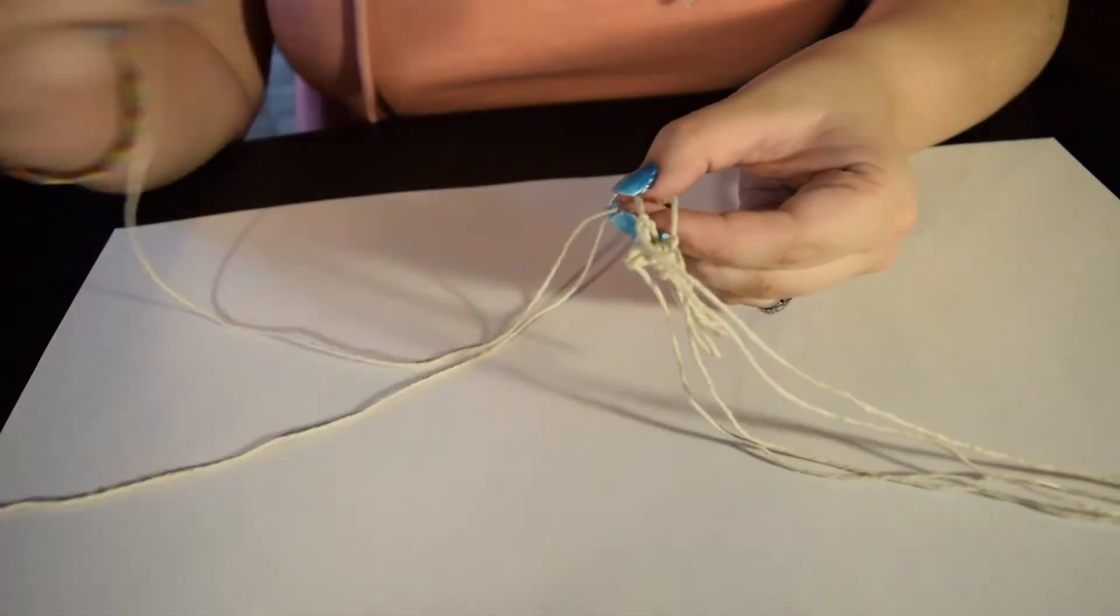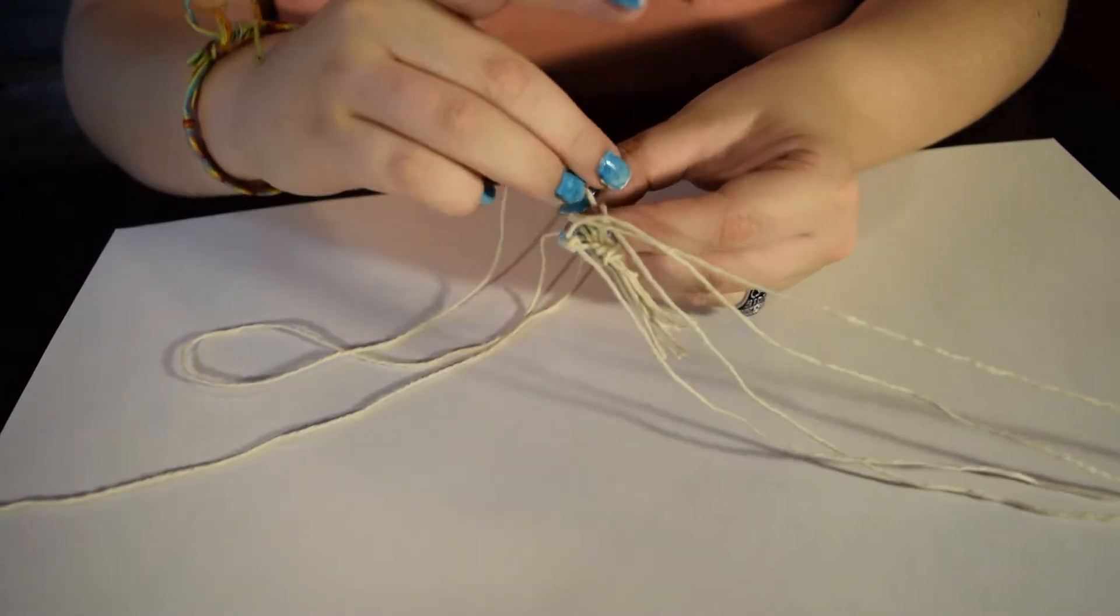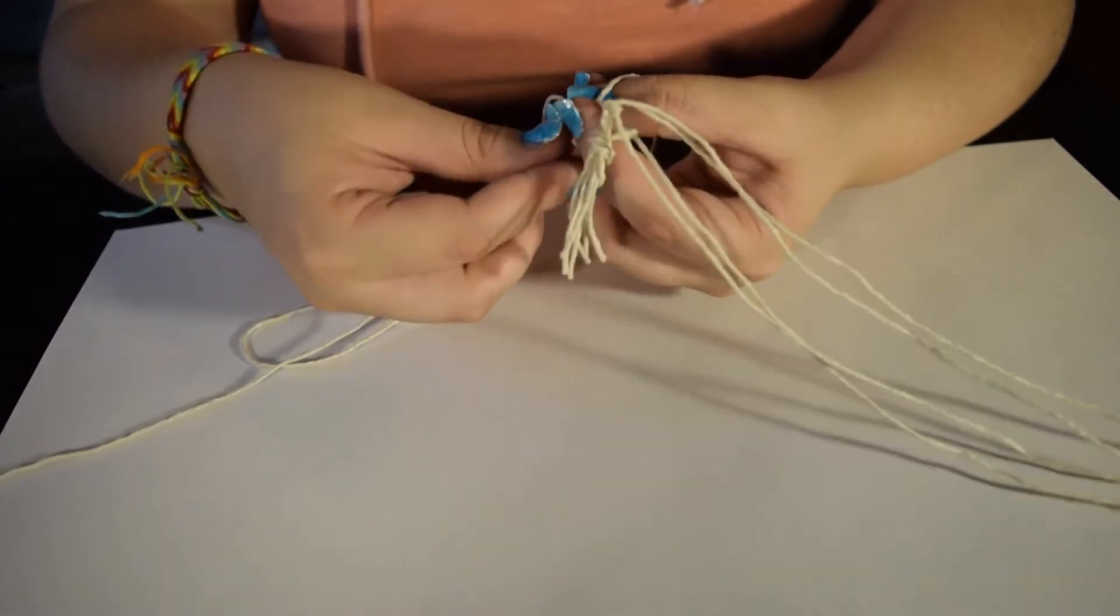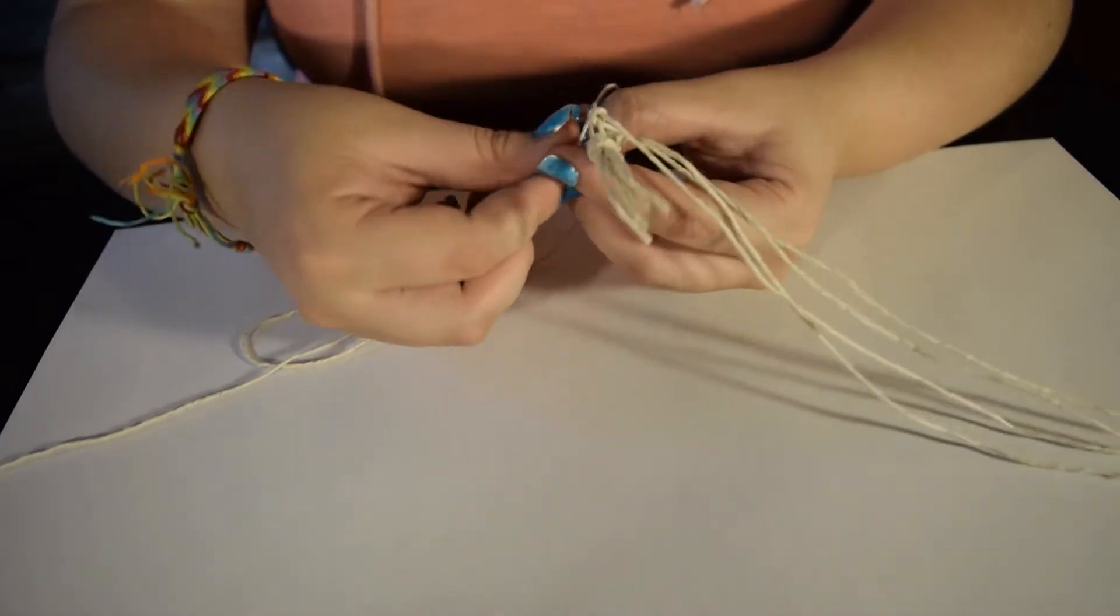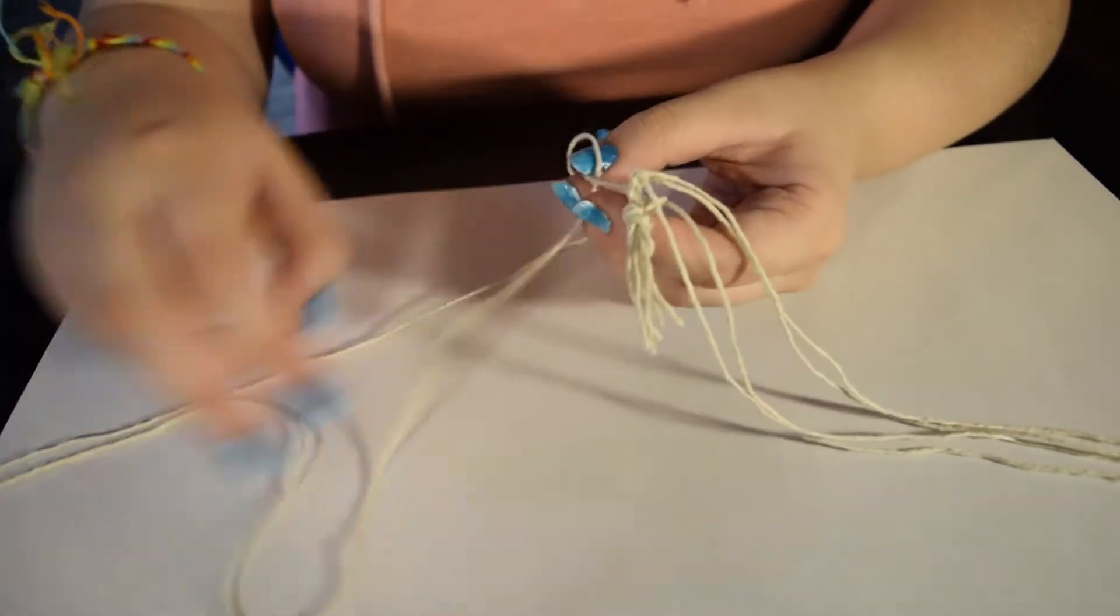This time, tie two of the strings that weren't in the same group together. Again, you're pretty much just making a mini fishing net.